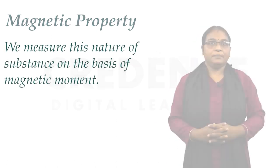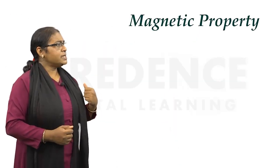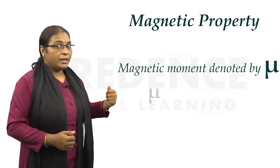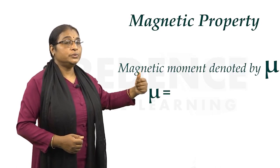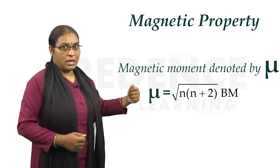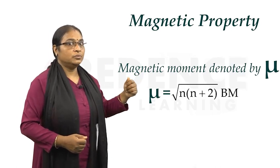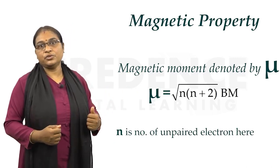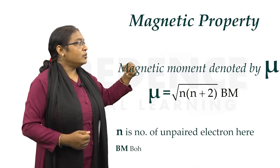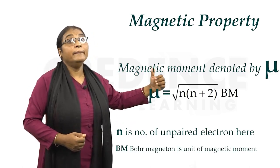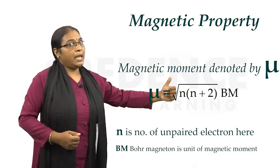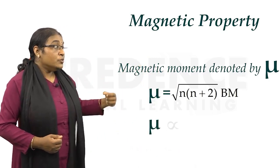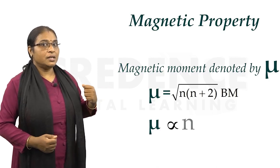The magnetic moment is denoted by mu (μ), and the formula is μ = √(n(n+2)), where n is the number of unpaired electrons. The unit of magnetic moment is Bohr Magneton (BM).